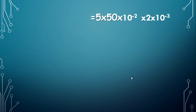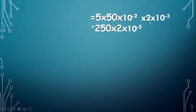Now we substitute the values for I, L and B. The value for current is 5, the value for length is 50 into 10 power minus 2, and the value for magnetic field induction is 2 into 10 power minus 3. When we multiply 5 and 50 we get 250, and then 10 power minus 2 and 10 power minus 3 gives 10 power minus 5, and we write 2 as it is.